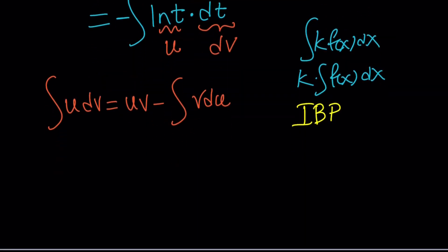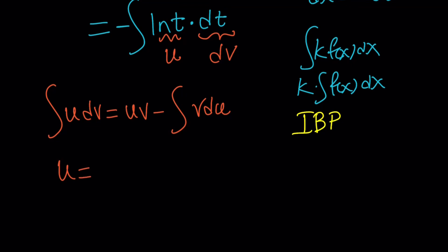So integration of UDV gives us UV. So what is DU and what is V? If U is equal to ln t,